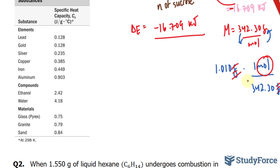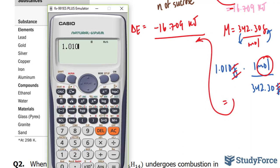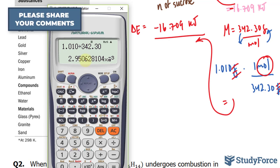So by calculating this, I can then substitute that answer into here. Let's go ahead and do that. 1.010 times 1 divided by 342.30. We end up with 2.9506.